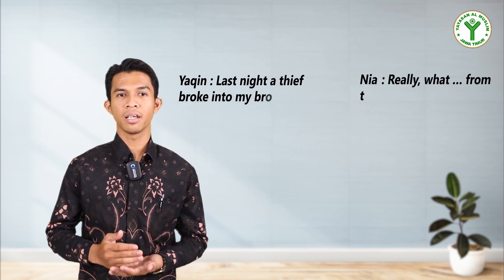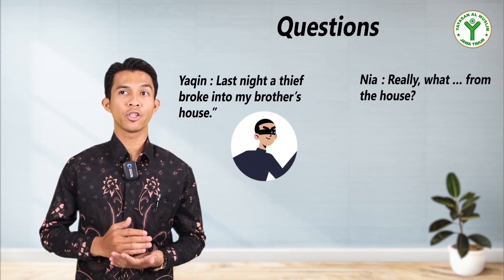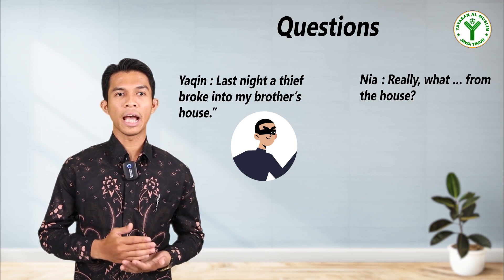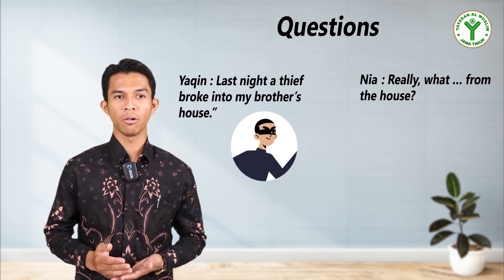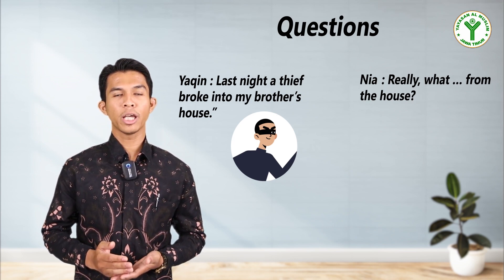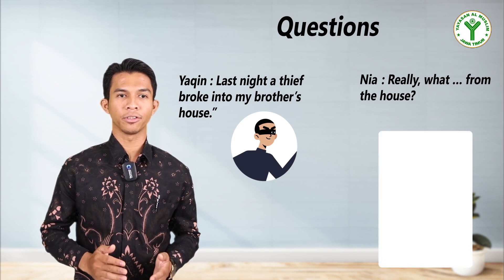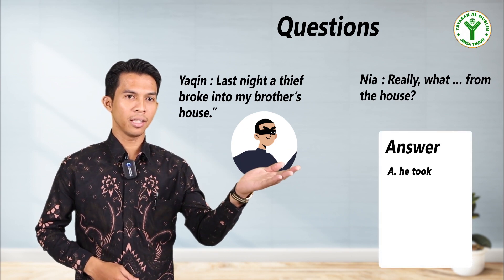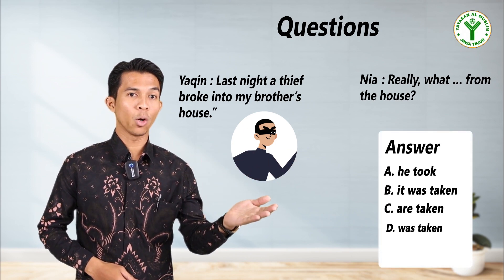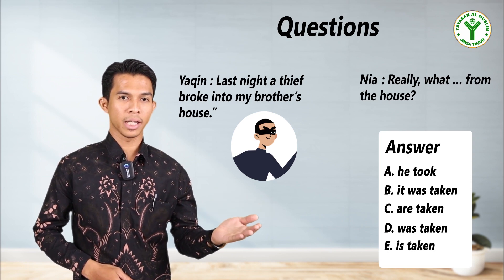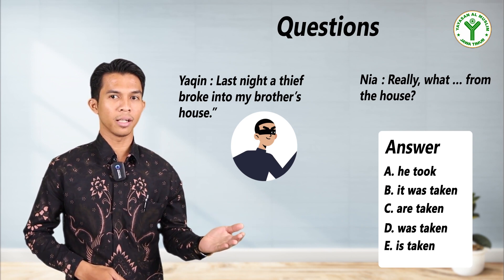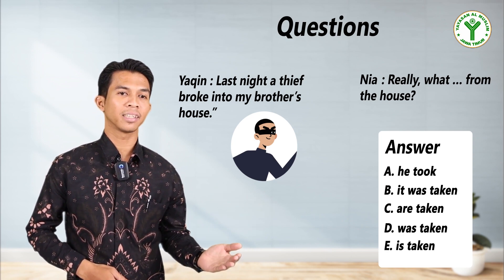Question two is a dialogue between Yakin and Nia. Yakin says, 'Last night a thief broke into my brother's house.' Nia answers, 'Really? What [blank] from the house?' You can choose one of the following answers: A) he took, B) it was taken, C) are taken, D) was taken, E) is taken.